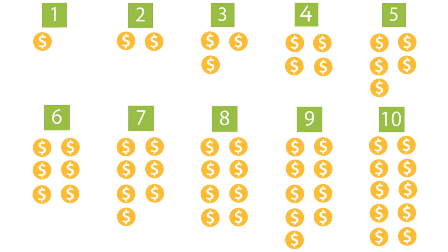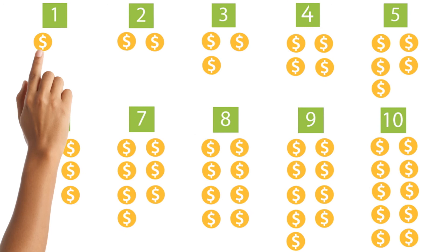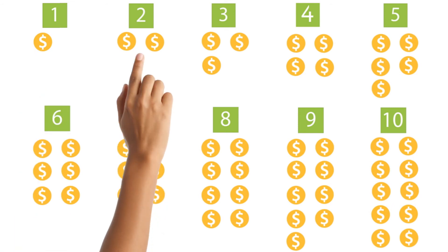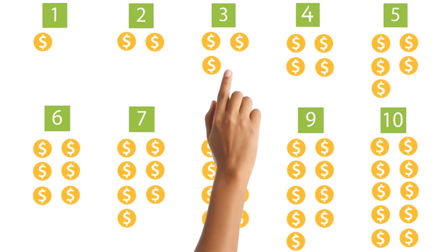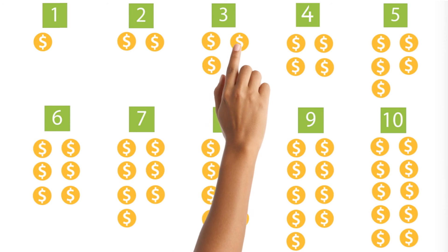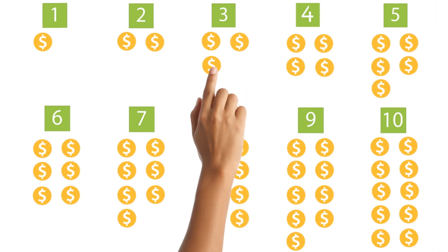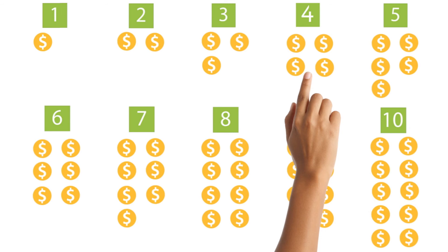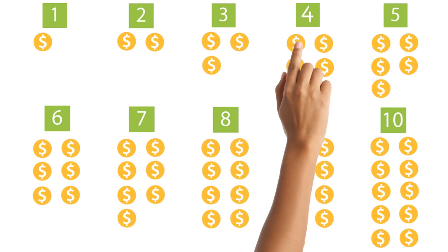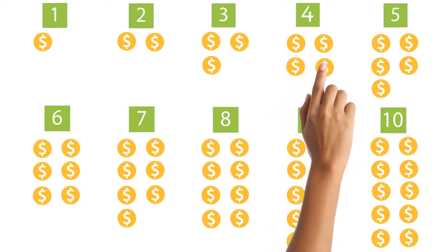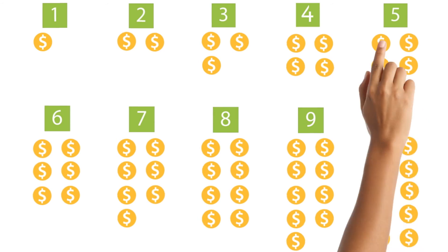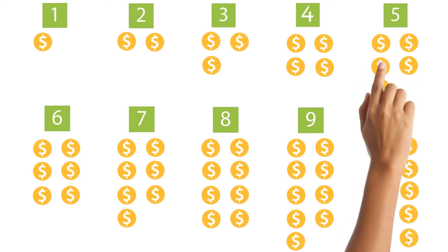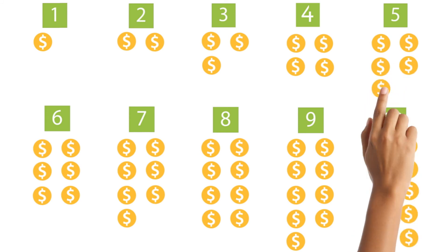Now let's count each quantity. One. One, two. One, two, three. One, two, three, four. This is five. One, two, three, four, five.